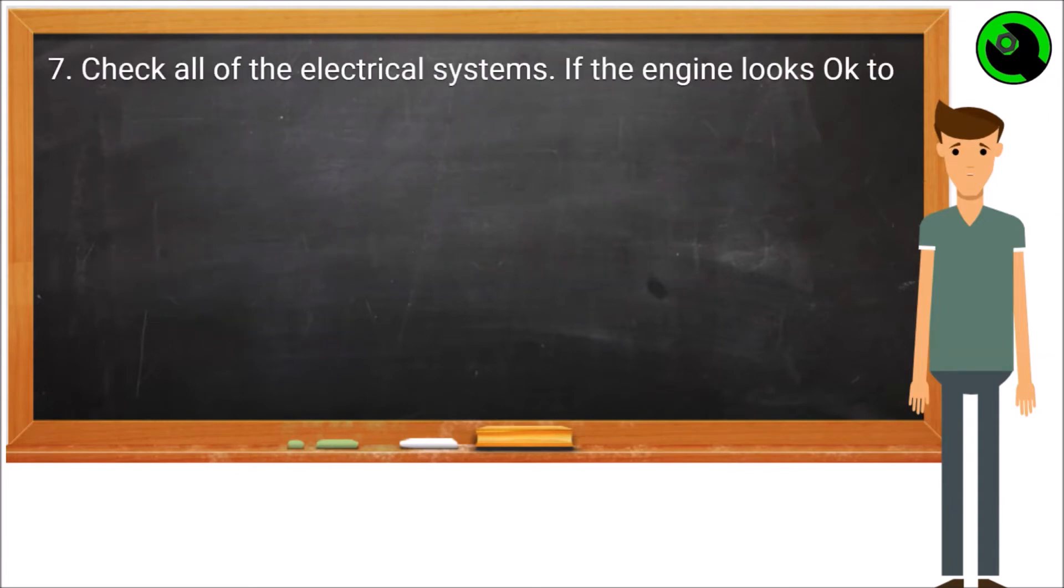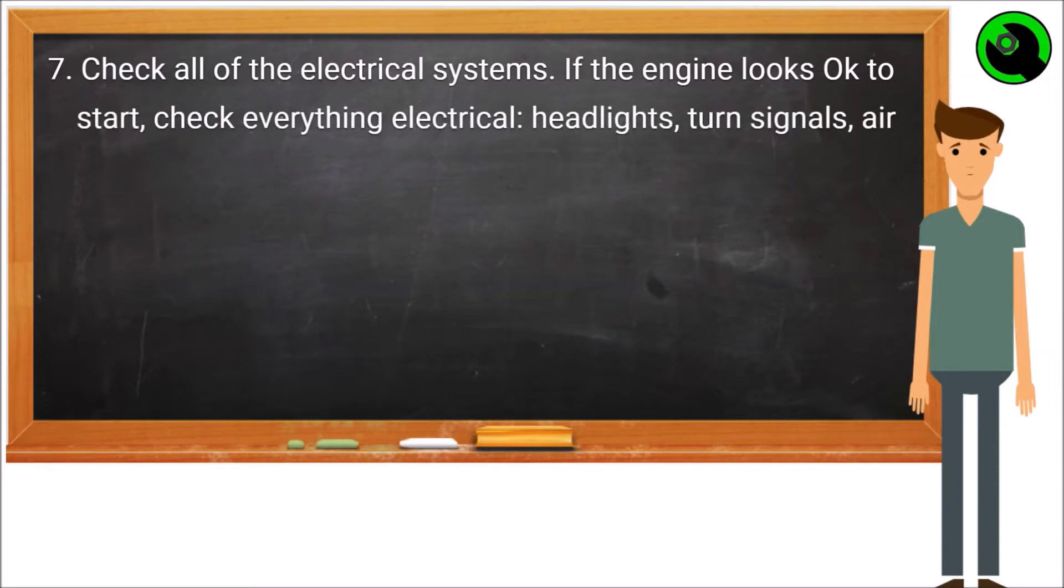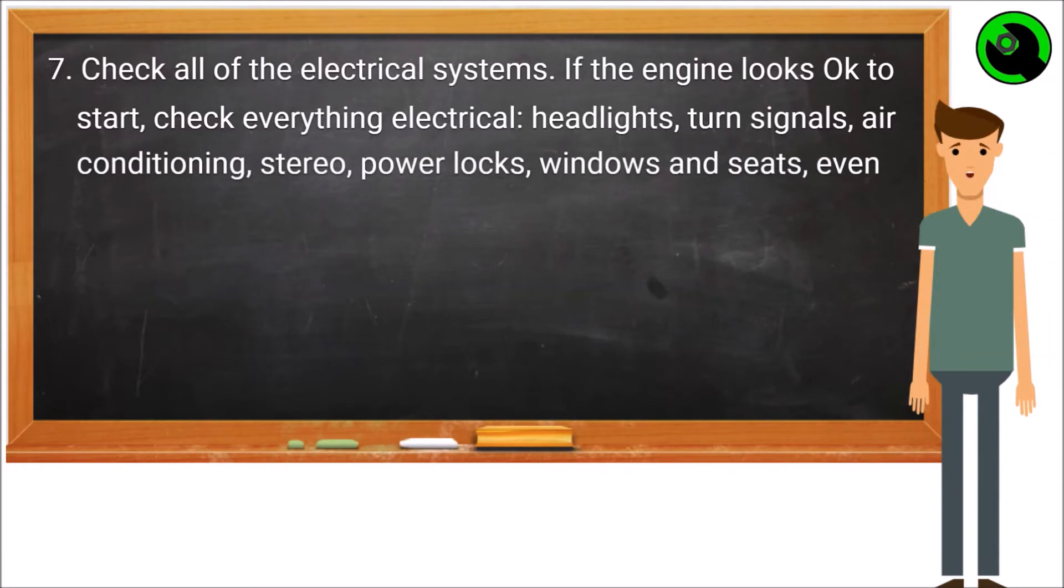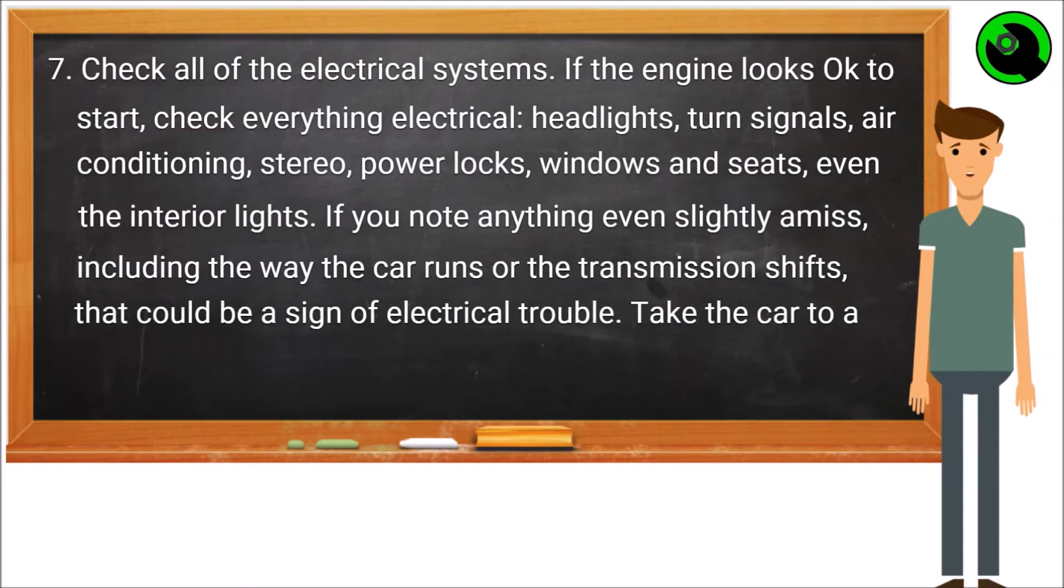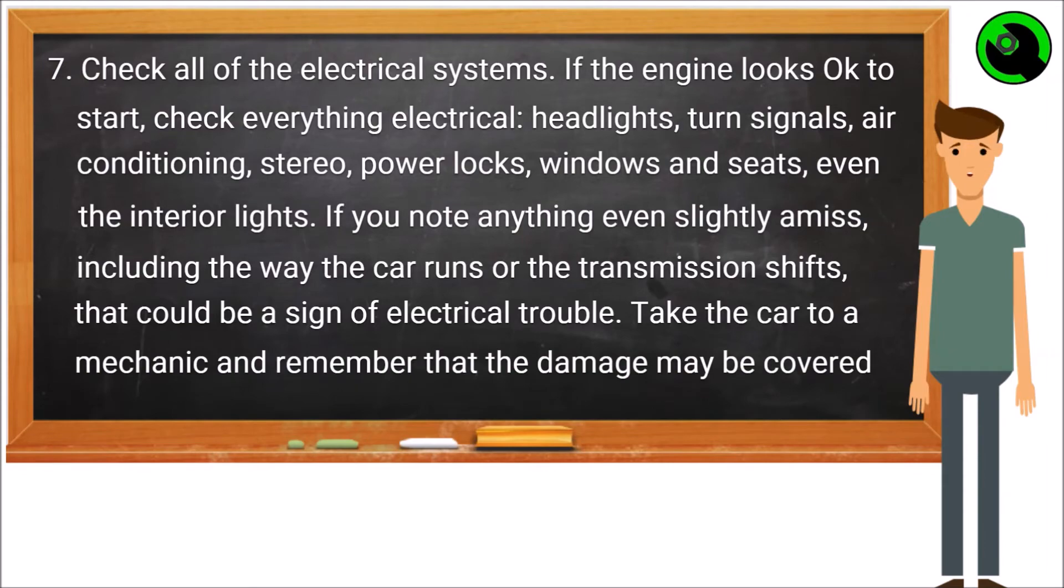Step 7: Check all of the electrical systems. If the engine looks okay to start, check everything electrical: headlights, turn signals, air conditioning, stereo, power locks, windows and seats, even the interior lights. If you note anything even slightly amiss, including the way the car runs or the transmission shifts, that could be a sign of electrical trouble. Take the car to a mechanic and remember that the damage may be covered by insurance.